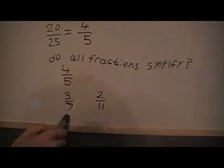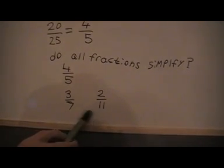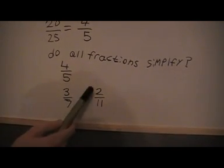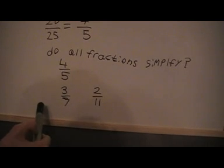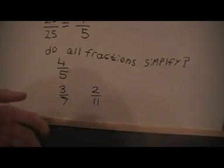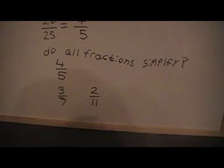there's no highest common factor of both the top and the bottom for this one. And also, for these two, notice that the numerator and denominator are both prime. When the numerator and the denominator are both prime, they don't simplify, because prime numbers only have the highest common factor as themselves.